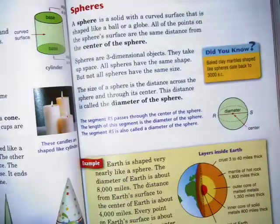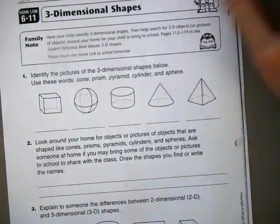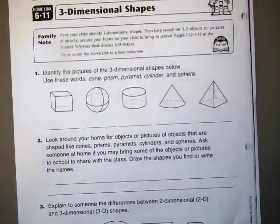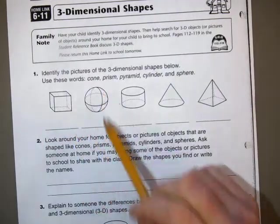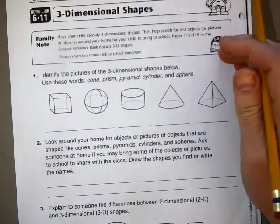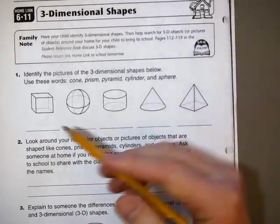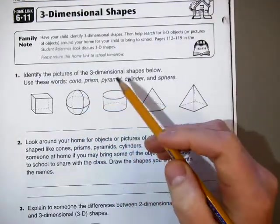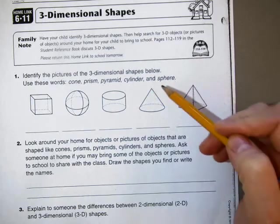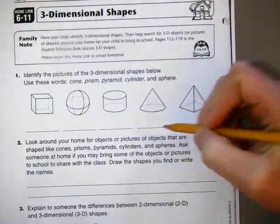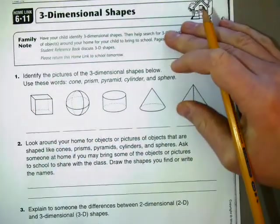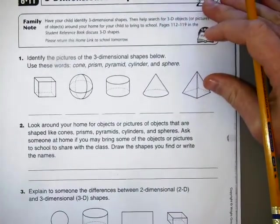Those are a few of the shapes I just wanted to make sure I introduced to you, for three dimensional shapes. Now if you go to look at this home link, 6-11, you can try to identify the shapes by what we just took a look at in the book. You need to use the words cone, prism, pyramid, cylinder, and sphere. Have the kids write right on these lines which ones you think they are.